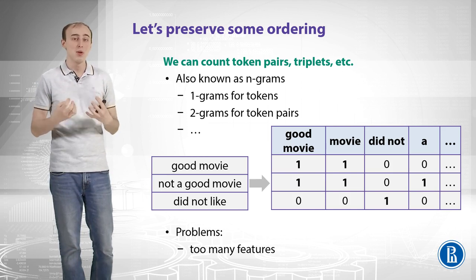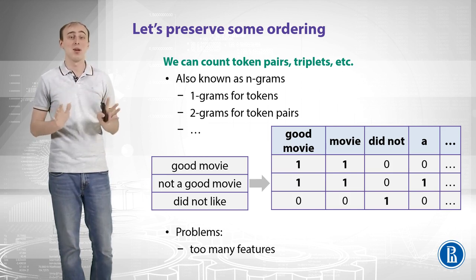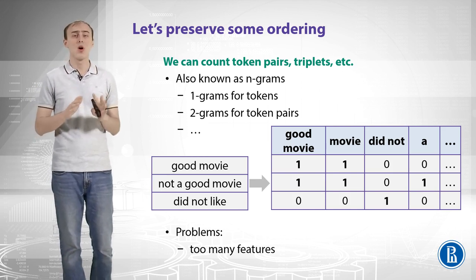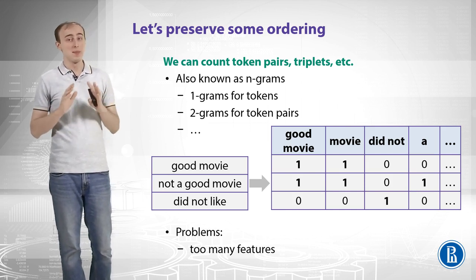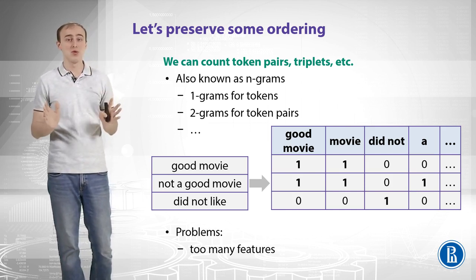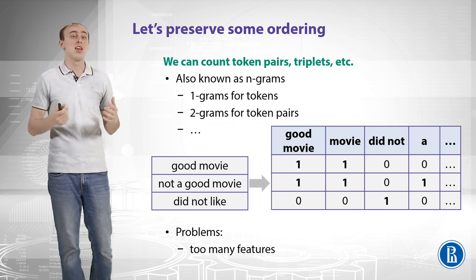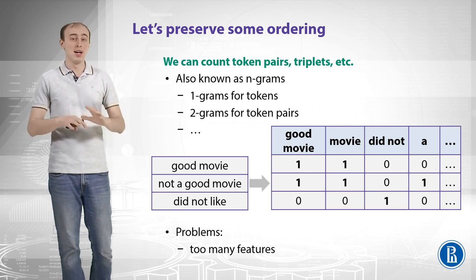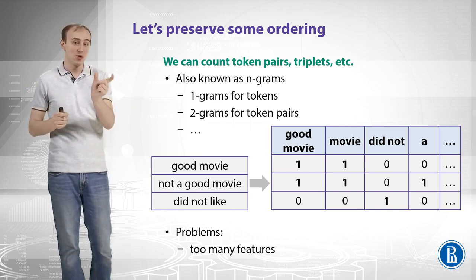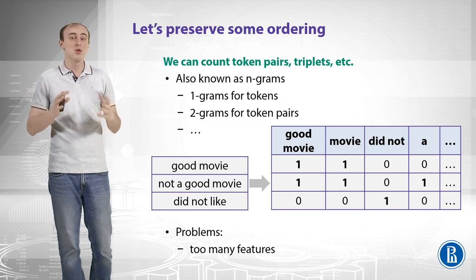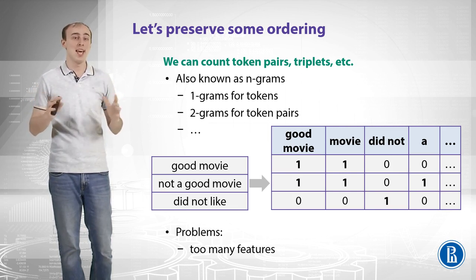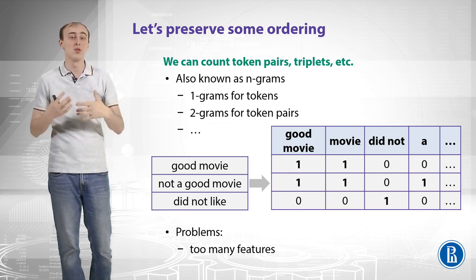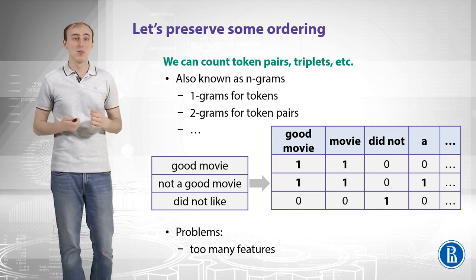We hope that this will help us to analyze the text better. The problems are obvious though: this representation can have too many features. If you have 100,000 words in your database and try to take pairs of those words, you can come up with a huge number that can exponentially grow with the number of consecutive words you want to analyze. So that is a problem.